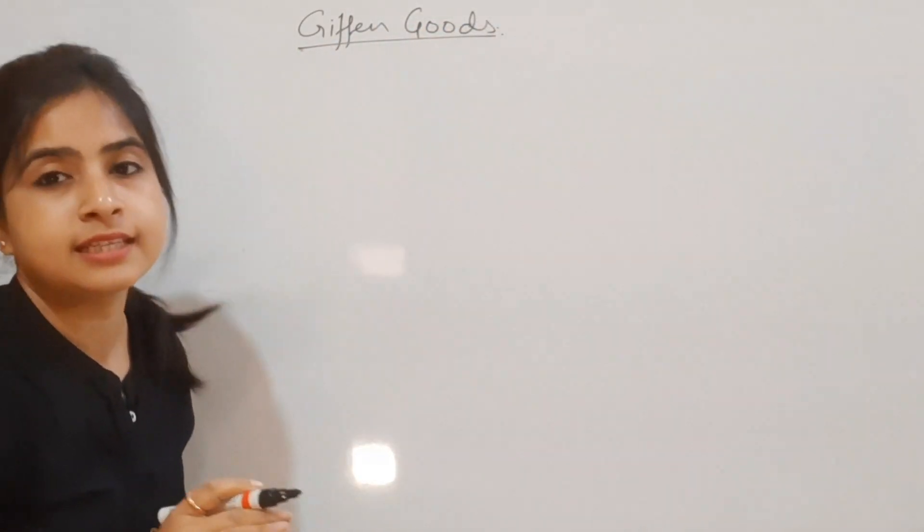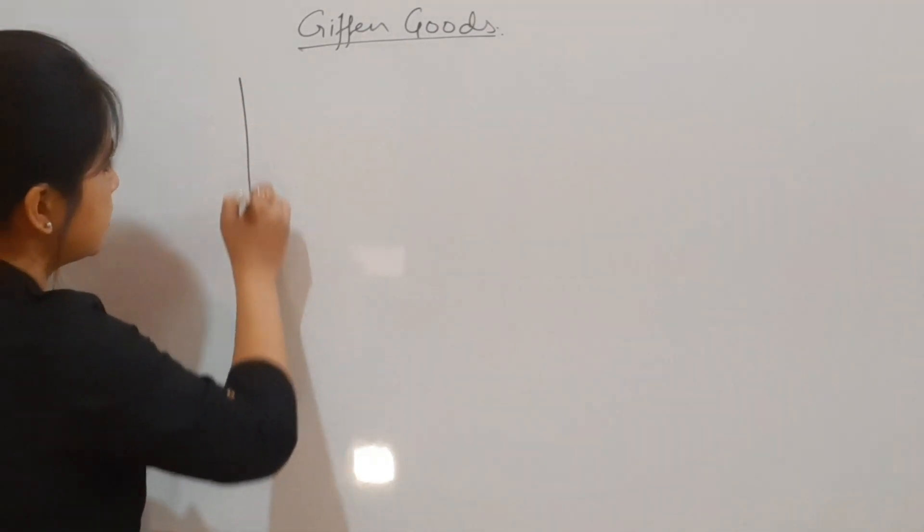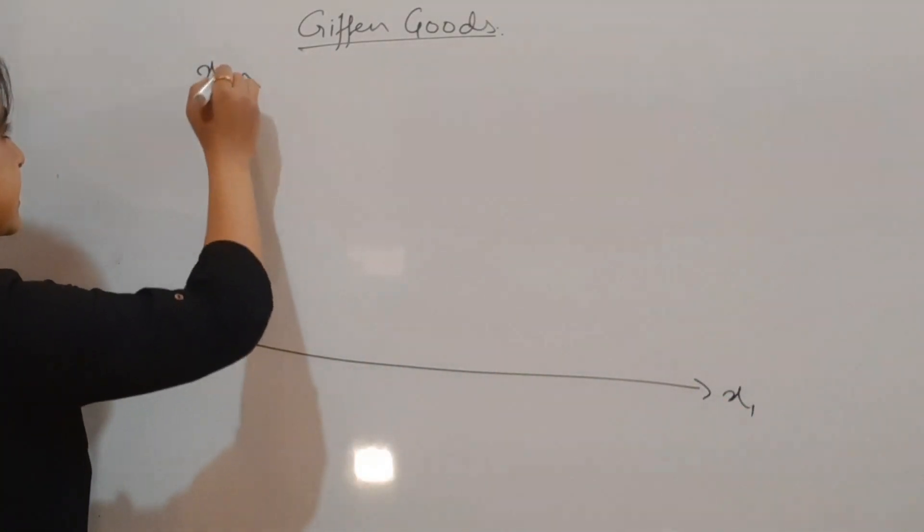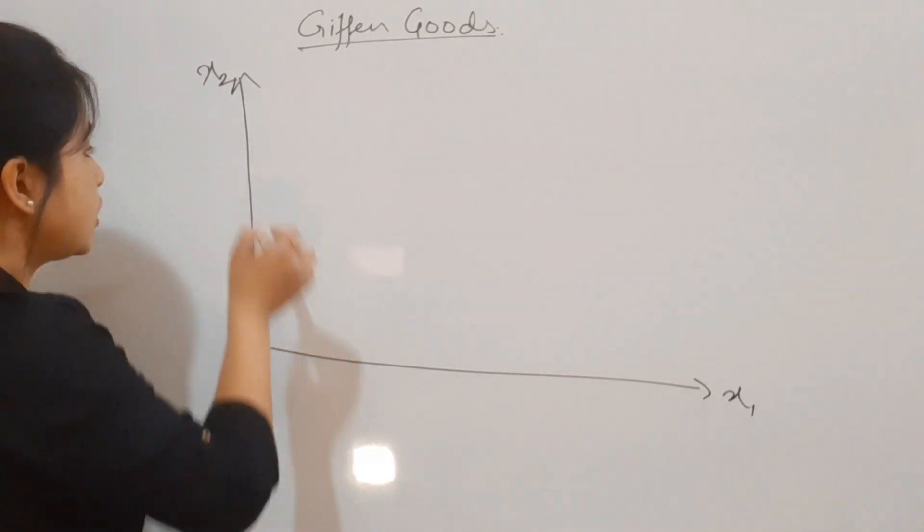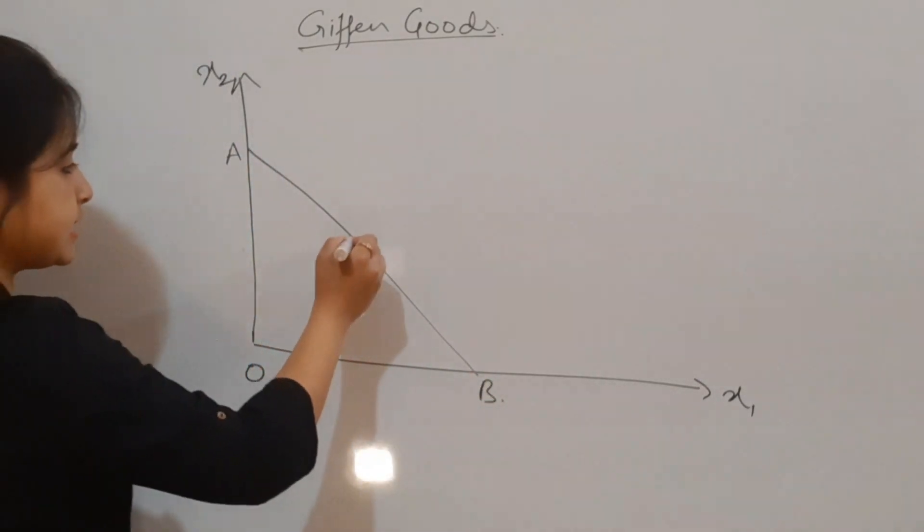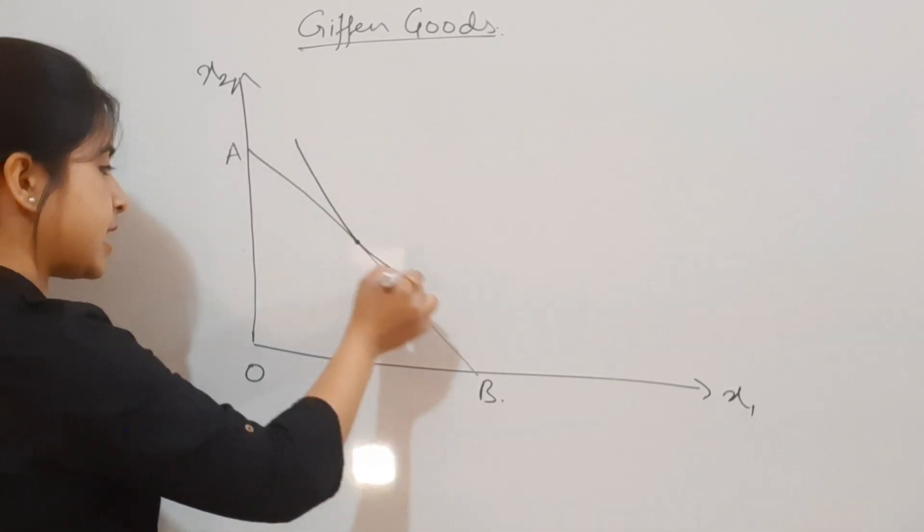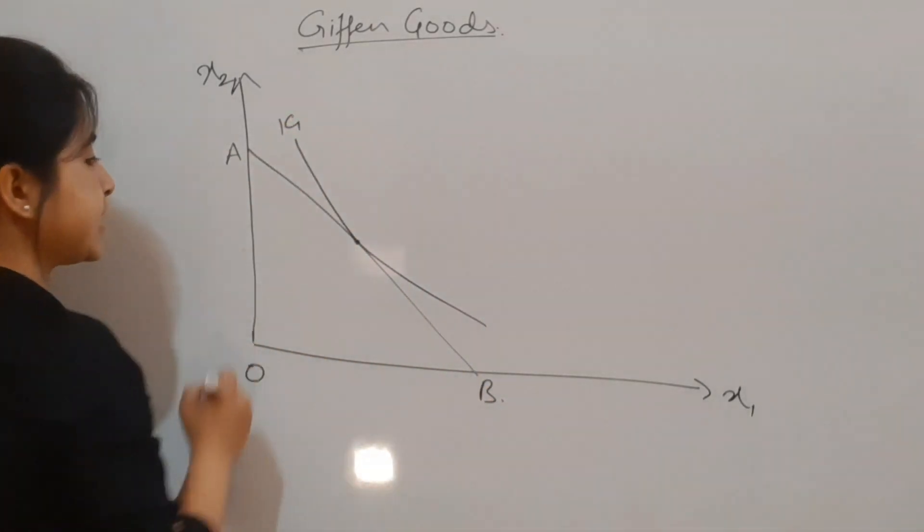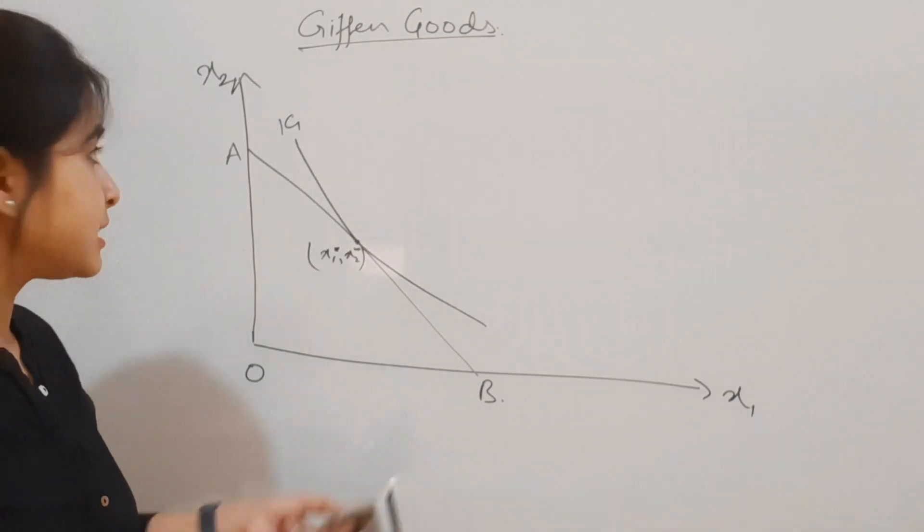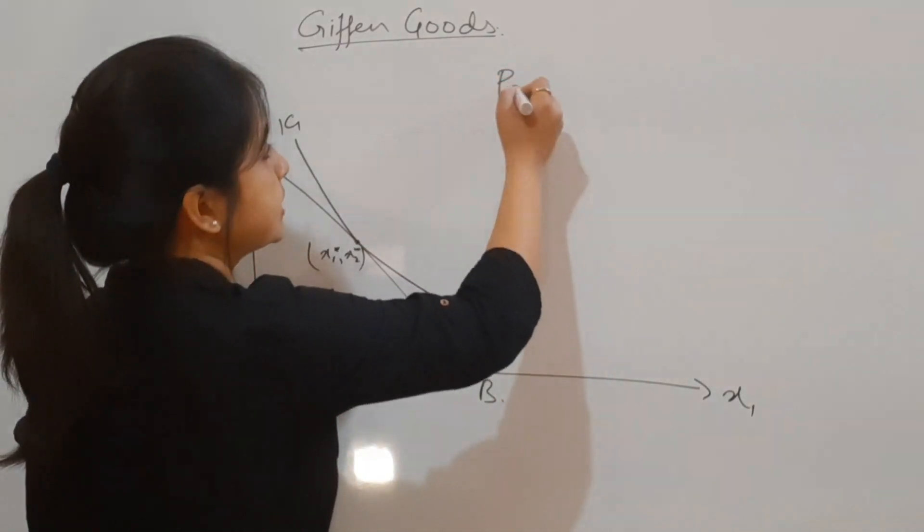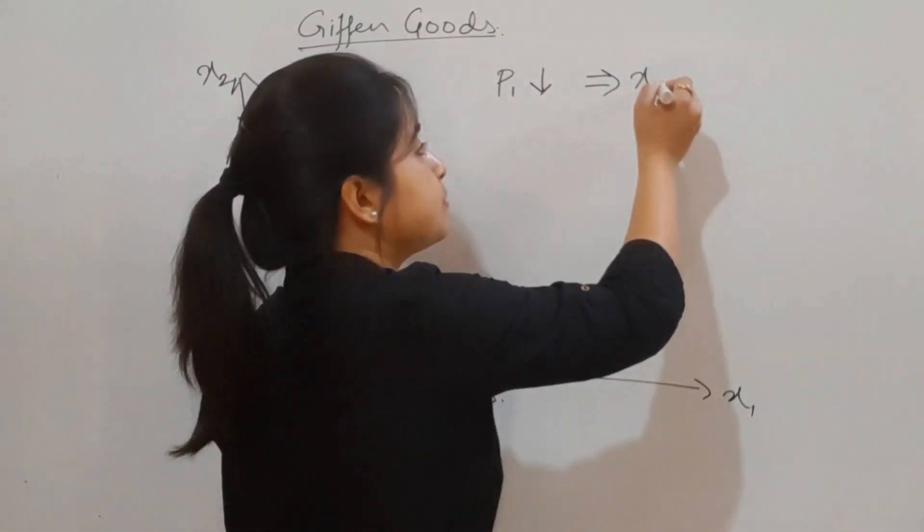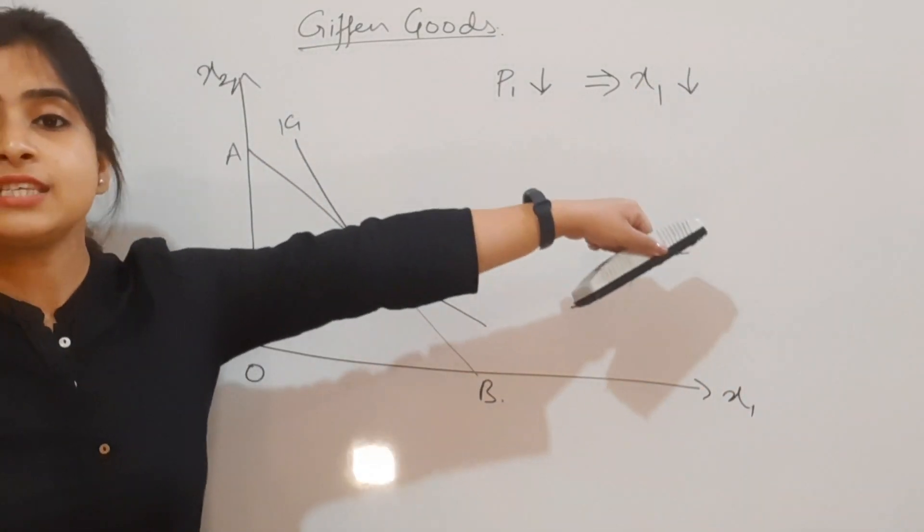Let me quickly move on to Giffen goods. Again, I'll plot it with a diagram. This is x1 and this is x2. The initial budget line is AB, and this is the point of optimal consumption where IC and budget line intersect. This is x1 star and x2 star.